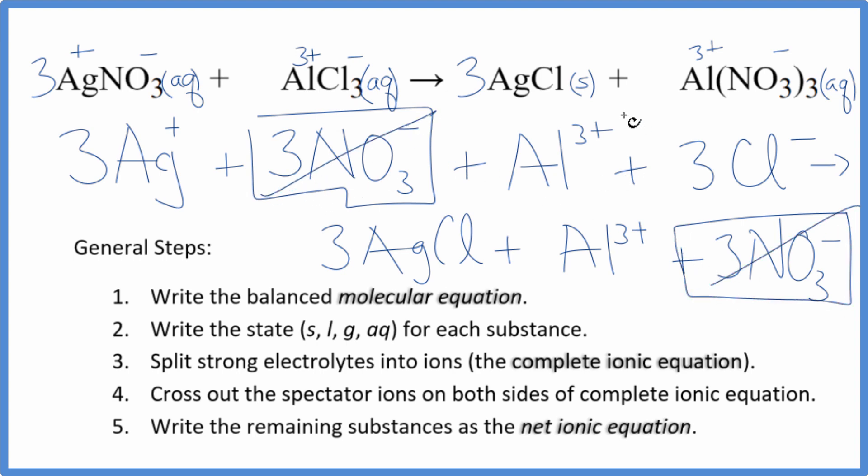Those are spectator ions. And I have the aluminum ion, Al 3+ here. Again, in the products, spectator ions. Those are gone.